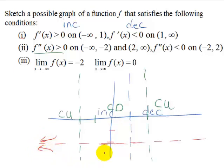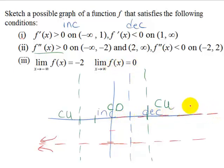Our last condition is the limit as x approaches infinity of the function is 0. So as we go off to the right for our right-hand behavior, we are going to be approaching 0.